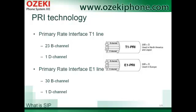There are two types of Primary Rate Interface: T1 line and E1 line. As you can see in the picture, T1 line has 23 B-channels and 1 D-channel, while E1 line has 30 B-channels and 1 D-channel. Each B-channel carries data, voice, and other services, while the D-channel carries control and signaling information.